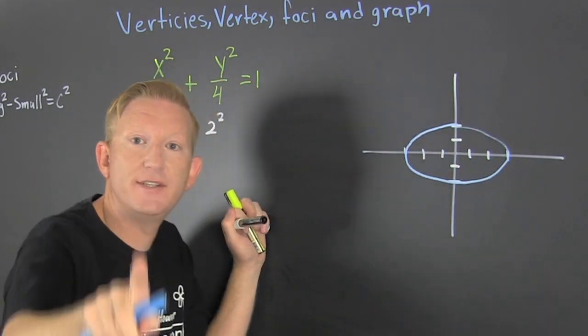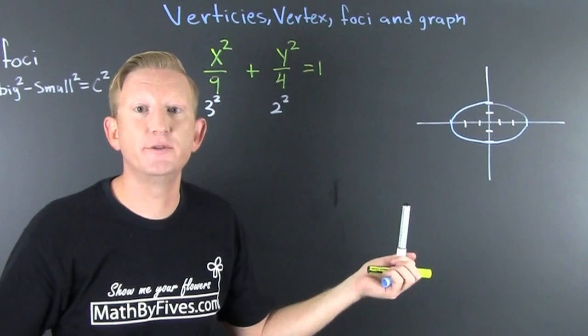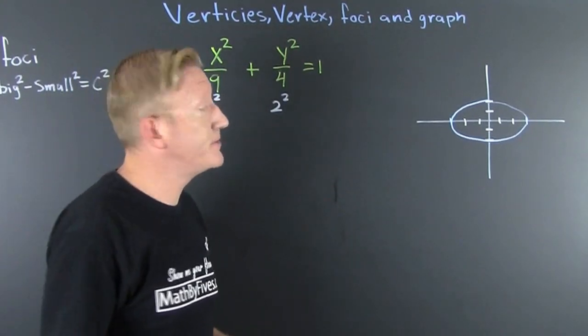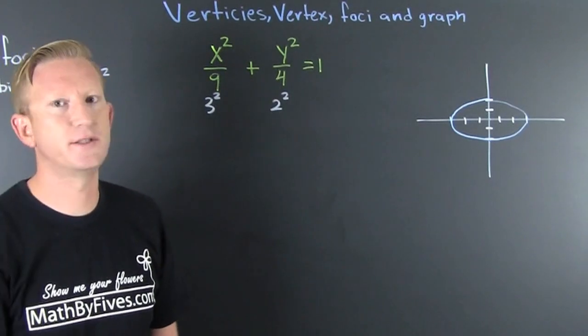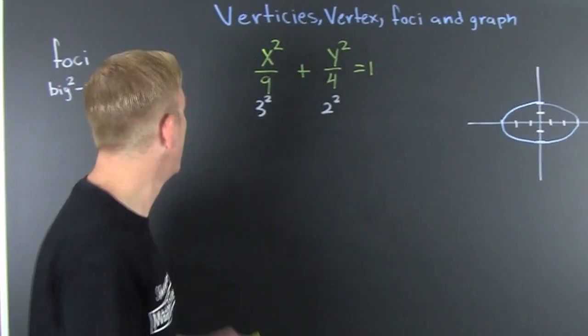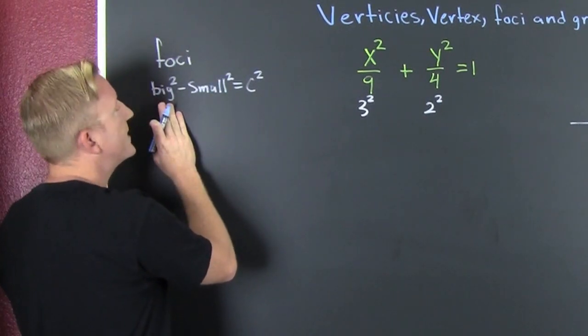And we just graphed it, but we should have found the foci first. Why? Because the ellipse is the locus of all points equal distance from two points. Those two points are the focus. Focus people, focus!